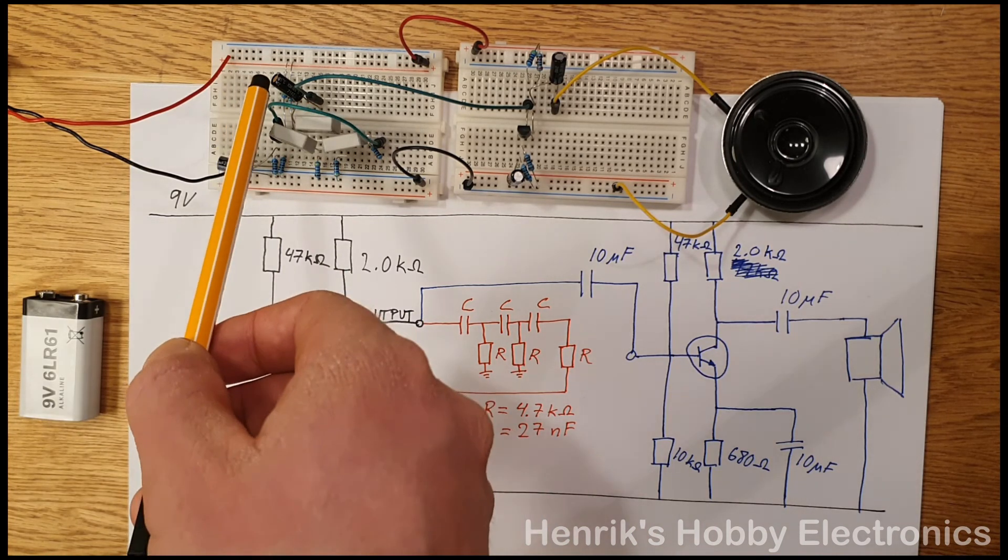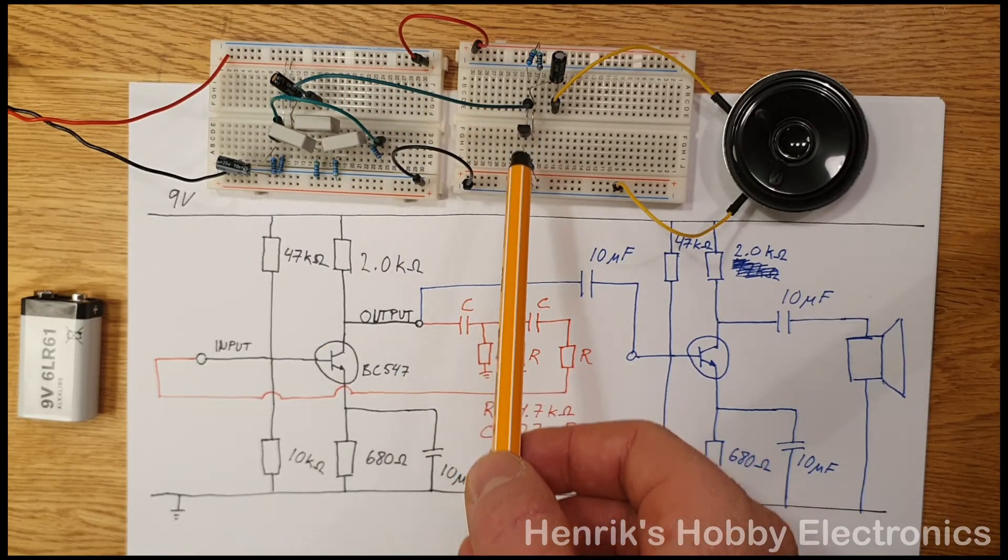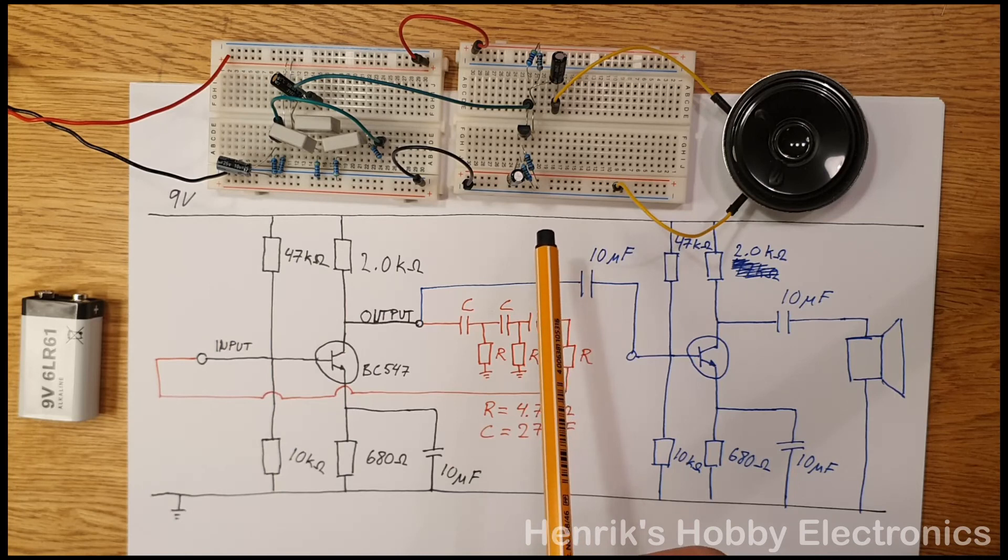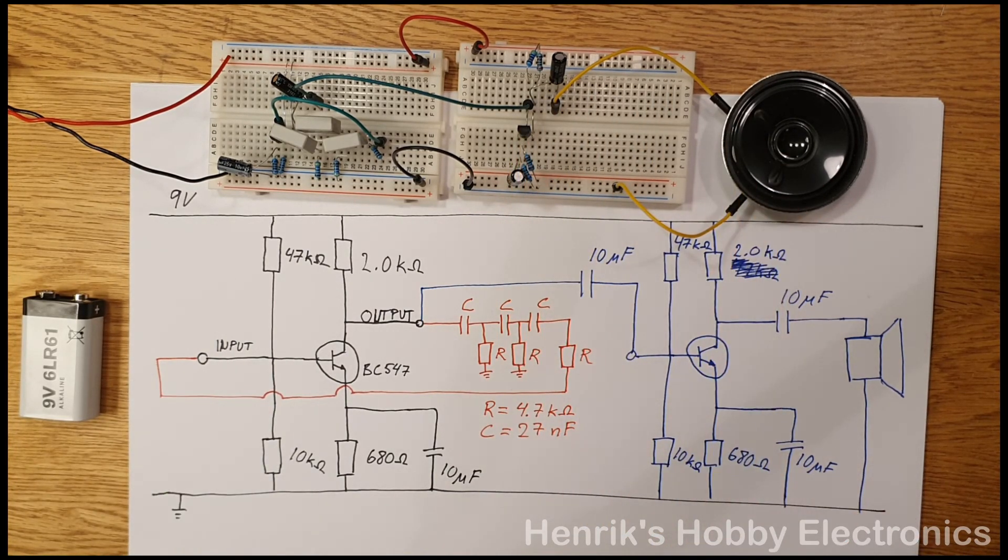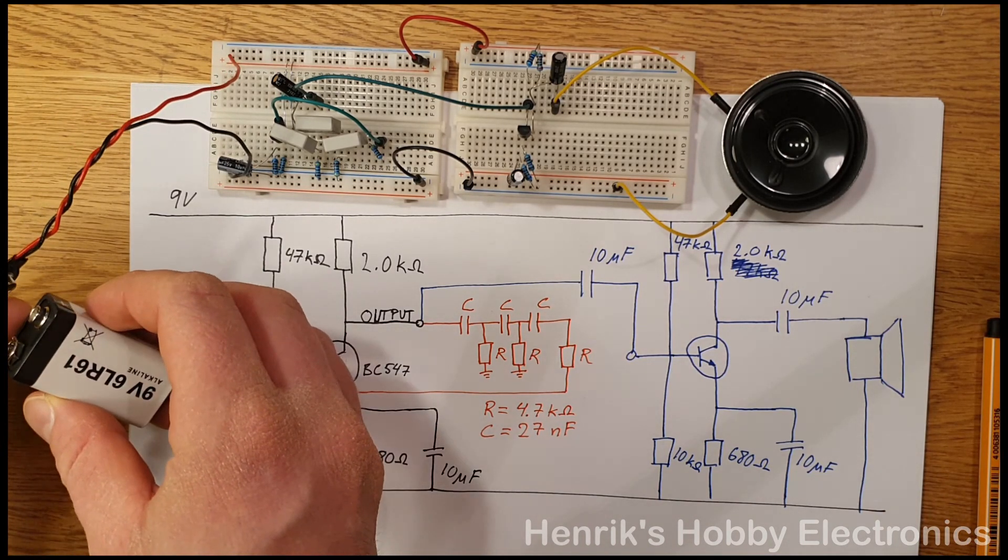And then after the DC blocking capacitor the output of this oscillator is taken to this second board. On this second board is where we have this amplifier which amplifies the signal before passing it into the speaker. Now if we connect the 9 volt battery we can listen to it.